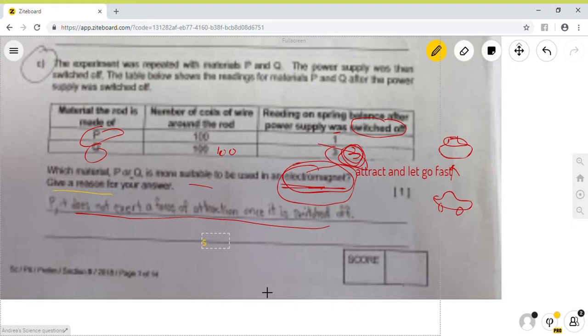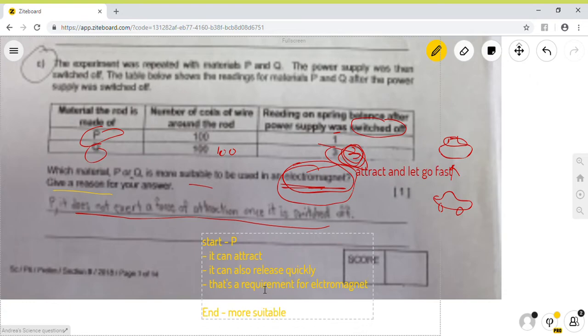So, the start is probably like, P. P is a better electromagnet. Right? So, the end is like, more suitable. Right? Then what's in between? So, in between we will say that, why P? Because P, it can attract, right? It can also release quickly. Right? And, that's a requirement for electromagnet. Okay? And because of that, you end. Therefore, it's more suitable as an electromagnet.